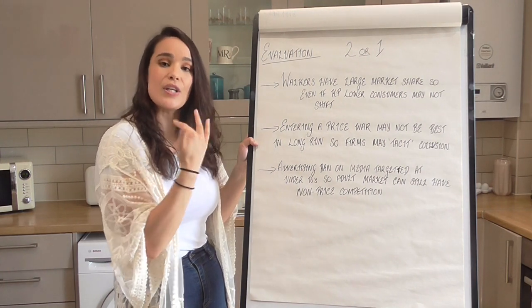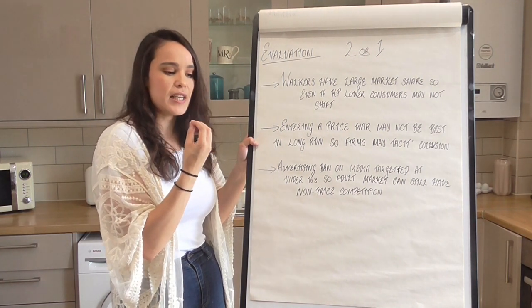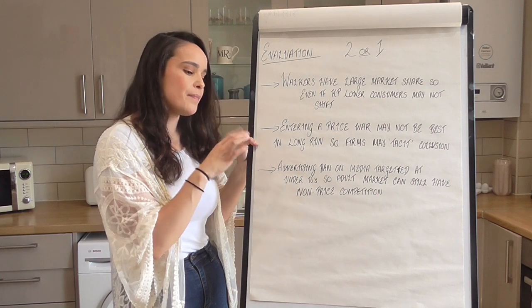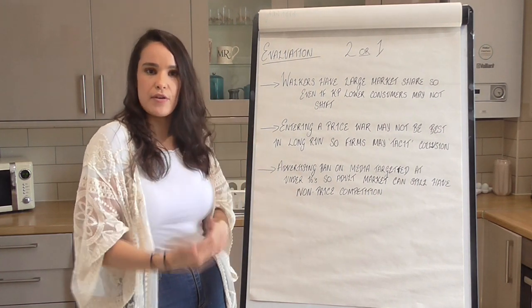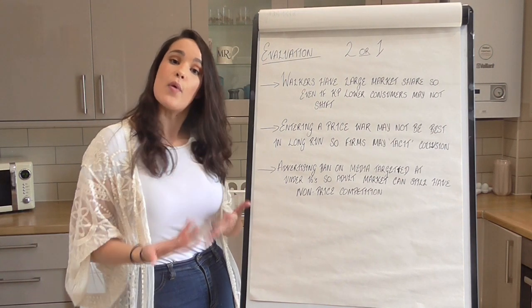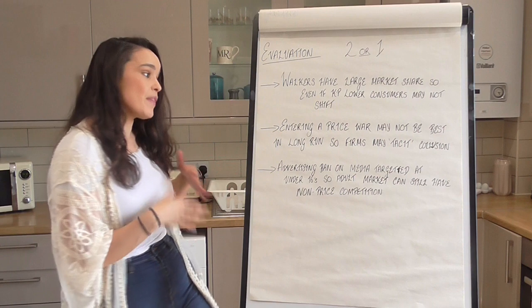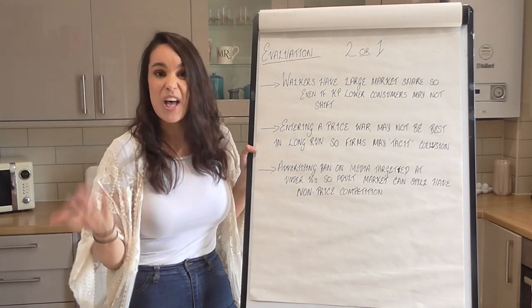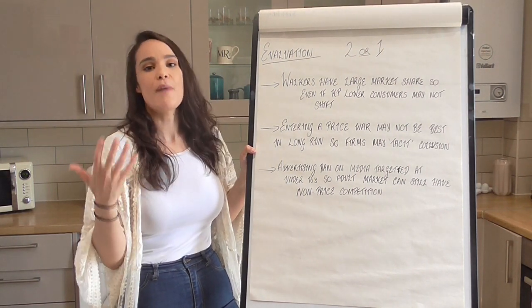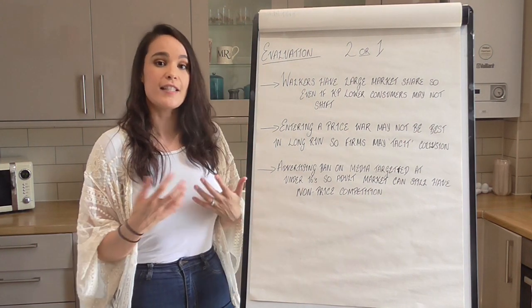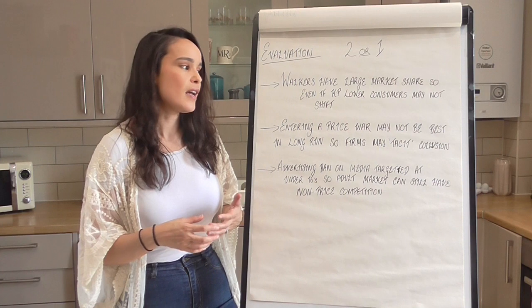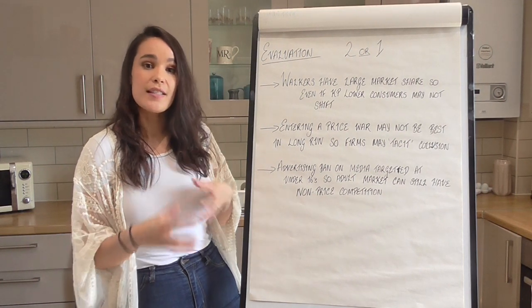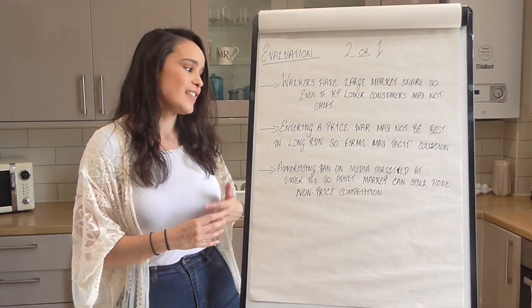For level 2 evaluation I would like to see extended, in-depth, applied evaluation. Any of those three points explained well would be high level 2. Low level 2 is where it hasn't really been applied properly or lacks extension. Level 1 is just a statement or couple of statements - not applied and not critical. Level 2 requires you to be critical of the information provided. Remember these are just some of the points you could have written - other correct points not listed here would also get full marks, and those answers are often the most interesting to read.